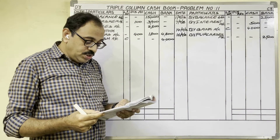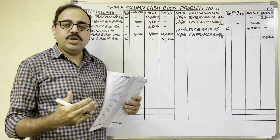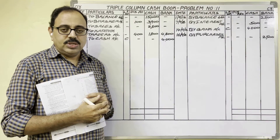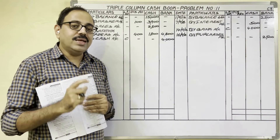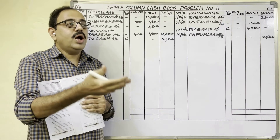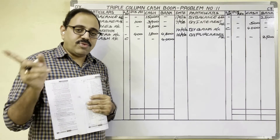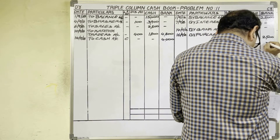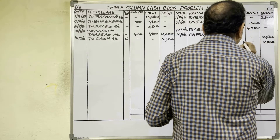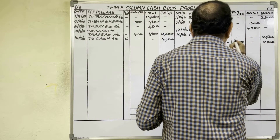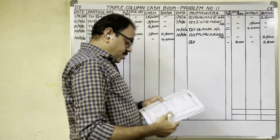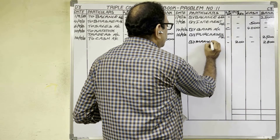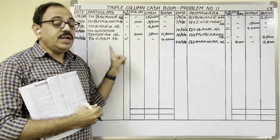24th date: issued cheque to Manohar, discount received. The firm owes Manohar 3,000 rupees but is issuing a cheque for 2,800 rupees in full settlement, so discount received is 200 rupees. Manohar will go to our bank and collect the money, so bank balance is decreasing — credit side bank column: cheque value 2,800 rupees, and discount column 200 rupees. In the particulars column write 'by Manohar account.' All transactions have now been posted in the cash book.